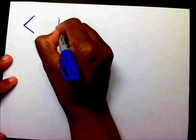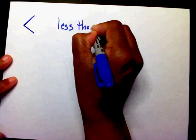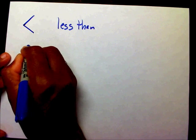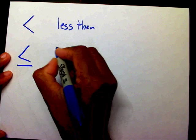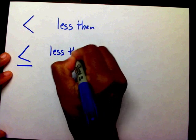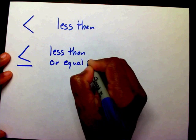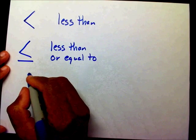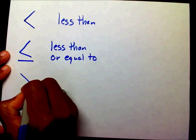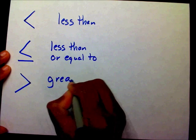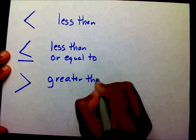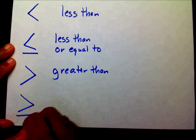That terminology has signs: less than, this is the less than sign, this is the less than or equal to, this is the greater than sign, and this is the greater than or equal to.